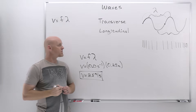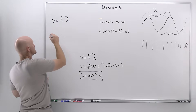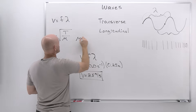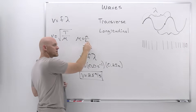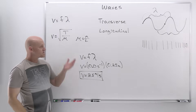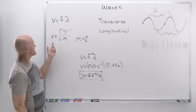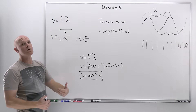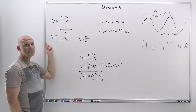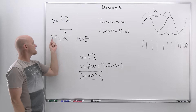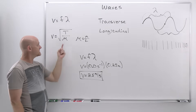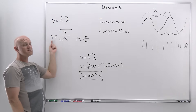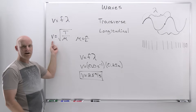Another key equation is the velocity of a wave on a string: v = √(T/μ), where T is the tension in the string and μ is the linear mass density, equal to the mass of the string divided by its length (in kg/m). Velocity is proportional to the square root of tension — if tension goes up by a factor of 4, velocity only increases by a factor of 2. Velocity is inversely related to linear mass density through the square root as well: if μ increases by a factor of 4, velocity is cut in half.